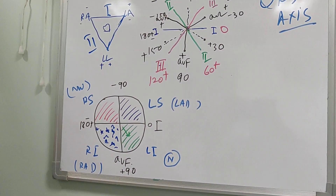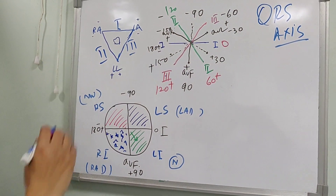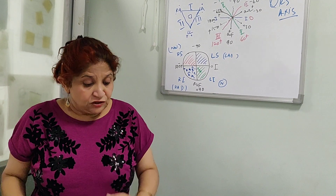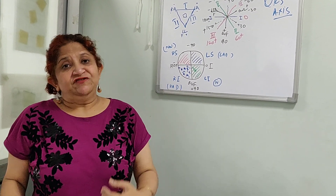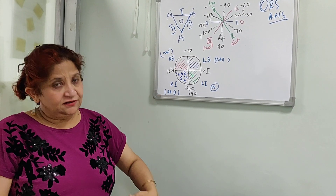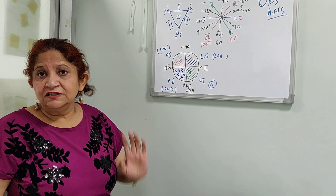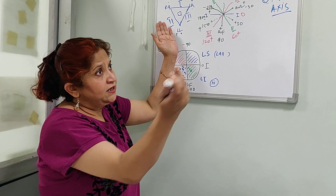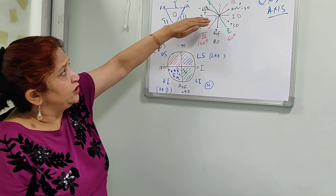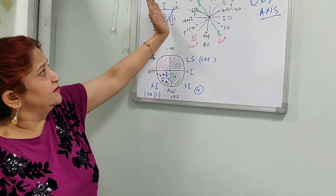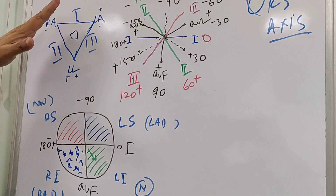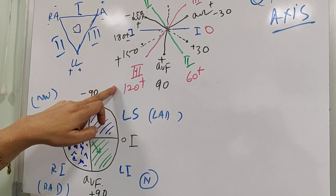Lead 3 is between left arm and left leg, with the plus pole down because the axis is down — so minus and plus. Now we can push these axes to the center of the heart. Lead 1 is at 0 degrees. Lead 2, when pushed, is at 60 degrees with the positive pole at 60 degrees. Lead 3 is at plus 120 degrees.